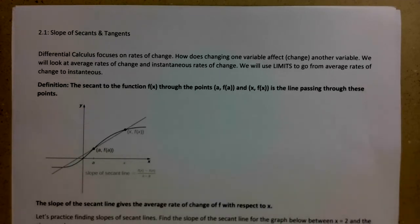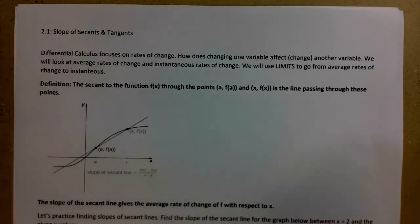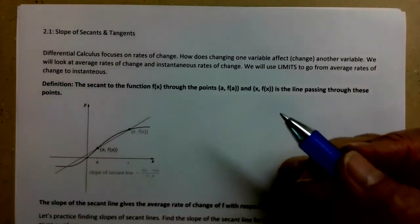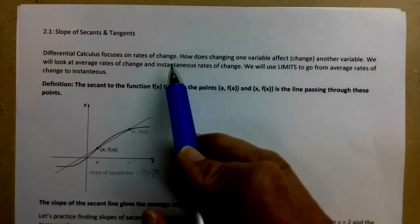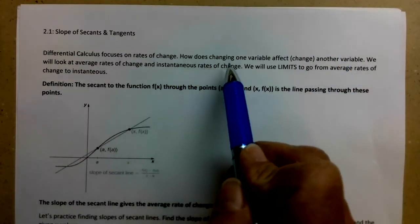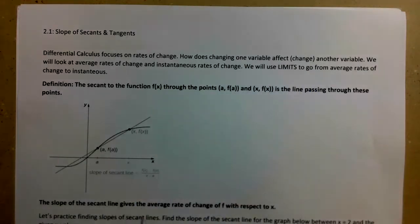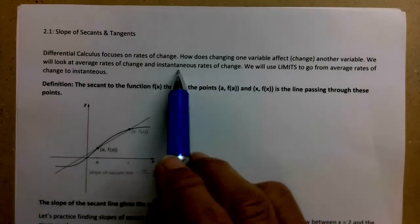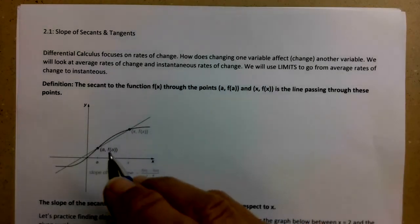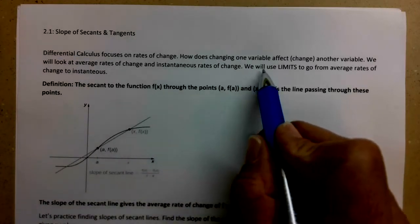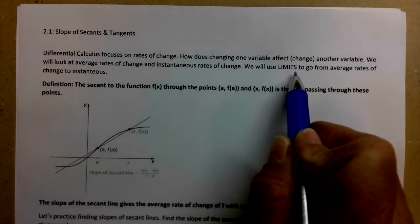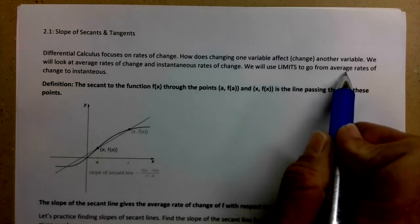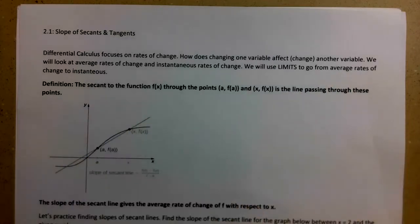Differential calculus is focusing a lot on rates of change. Rates of change is another way of saying slope, or how does changing one variable affect or change another variable. We'll be looking at average rates of change and instantaneous rates of change, and we'll need to know the difference between those two and how we calculate them. We'll use limits as we get started to go from an average rate of change to an instantaneous rate of change.